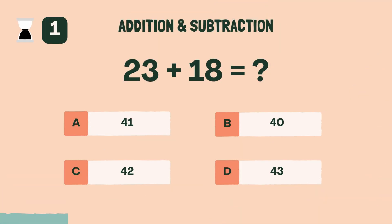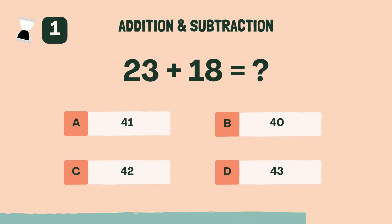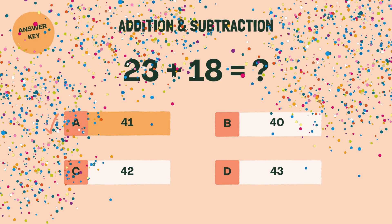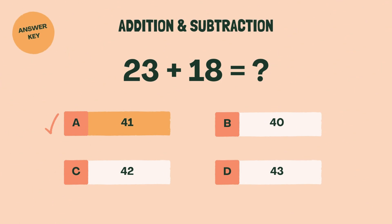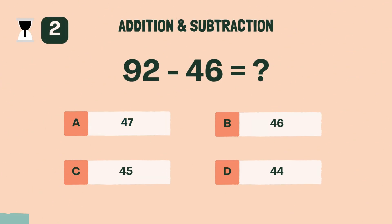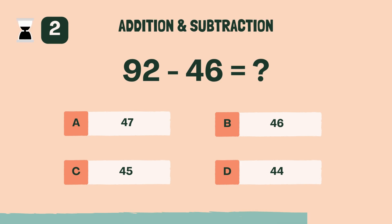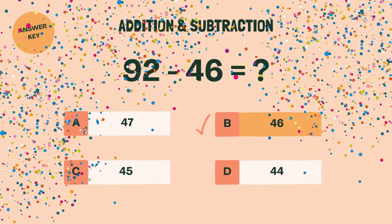What is 23 plus 18? A, 41. What is 92 minus 46? B, 46.